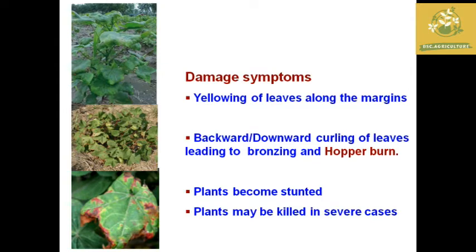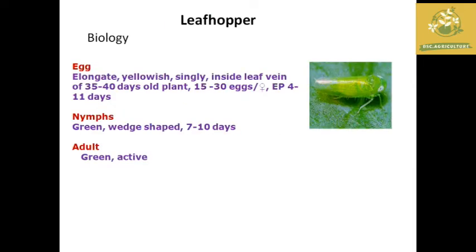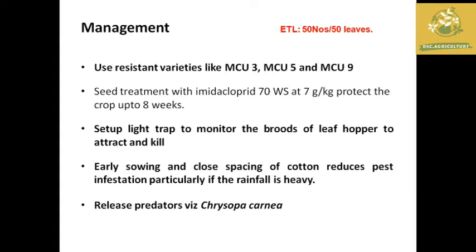The plant becomes stunted and in several cases the whole plant is killed. Regarding biology, the egg is elongated and yellowish, laid singly. The nymph is green colored and bit-shaped, with a life period of around seven to ten days. The adult is green in color and active. The economic threshold level for leaf hoppers is 50 numbers per 50 leaves.